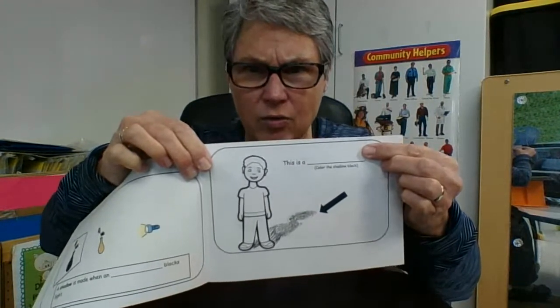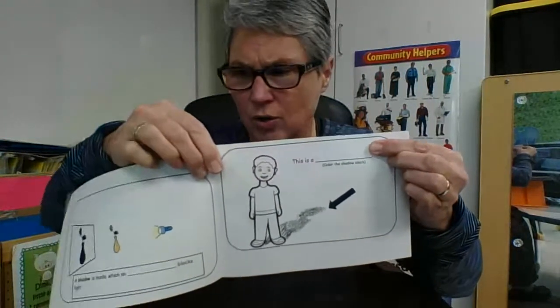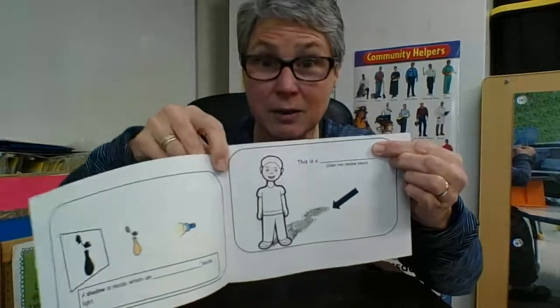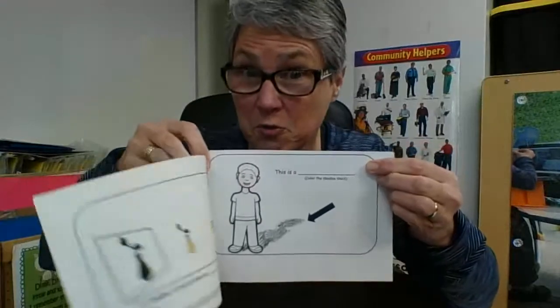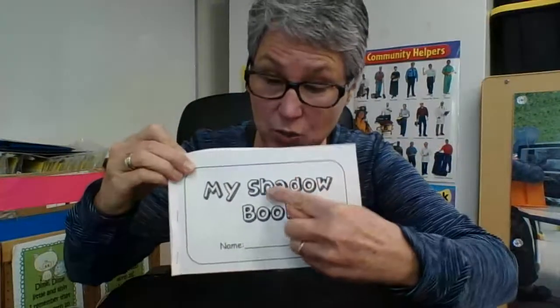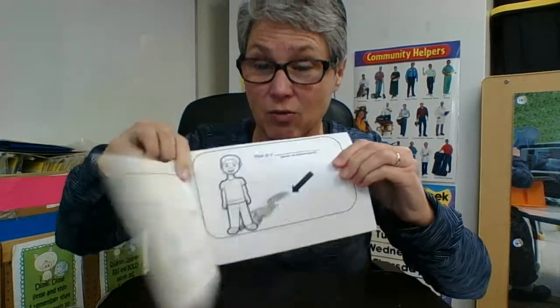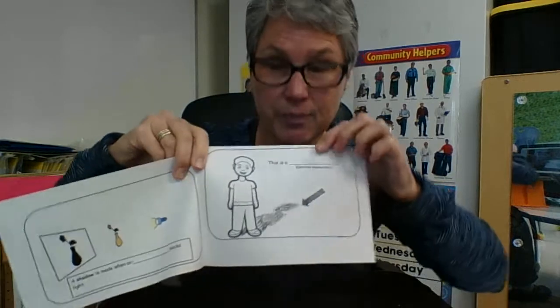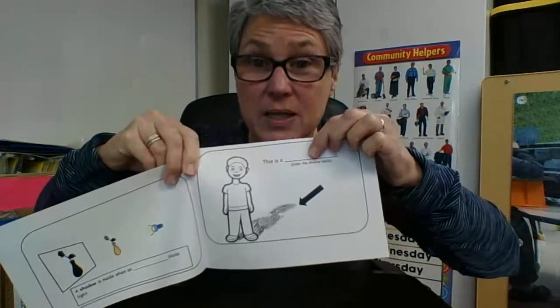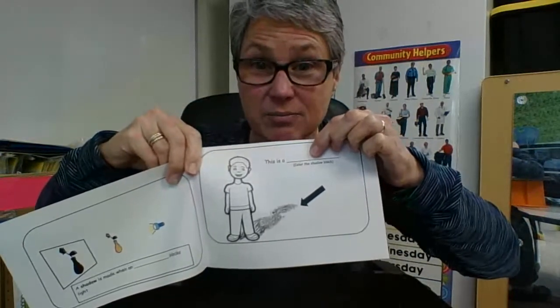Mrs. Clapp, I don't know how to write that word. Well, you've got a resource. Here's the word shadow right here. Shadow. So I can write that word right on this blank line.